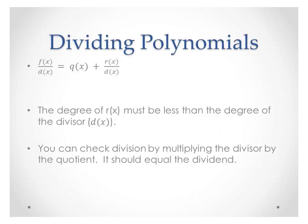The first thing we're going to talk about is dividing polynomials. At the top you'll see that we have some function f of x divided by another polynomial d of x. Your result is going to be the quotient, because the quotient is your result from dividing. There might be a remainder, and that remainder still has to be divided by our d of x. The degree of our remainder r of x must be less than the degree of the divisor, which is what you are dividing by.